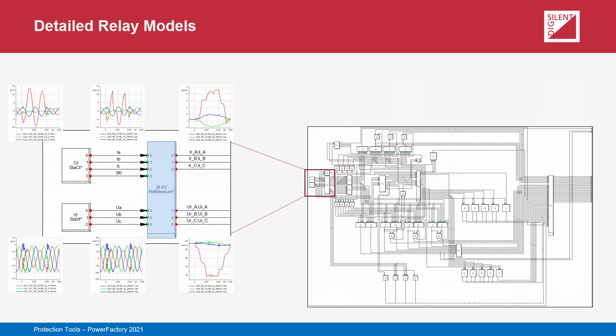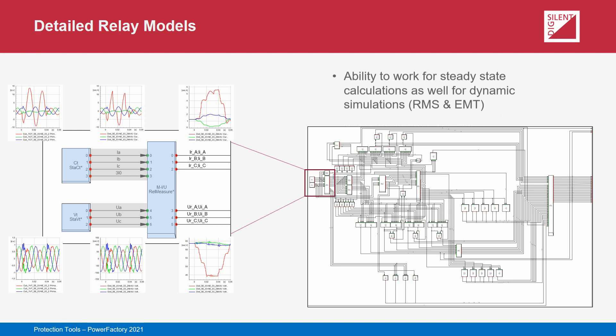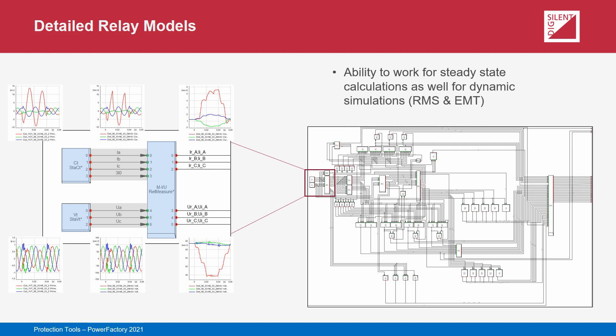As an example, a relay model may contain one or more measurement blocks. The measurement blocks represent the signal processing and conditioning behavior of the real relay. Input signals are provided to the blocks by CT and VT models. For EMT simulation, the block will sample the input signal and extract the fundamental frequency component of the input signal. The calculated values will be assigned to output signals and further processed by the other blocks of the relay model.